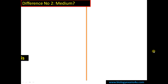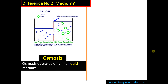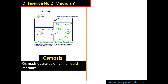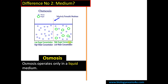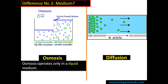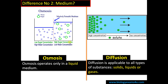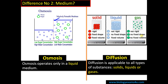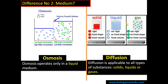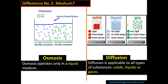Difference number two is regarding the medium. In the case of osmosis, it operates only in a liquid medium — it is a movement of solvent or water molecules from the region of low concentration to the region of high concentration through a semipermeable membrane. Whereas in the case of diffusion, it can occur in any type of substance: solid, liquid, or gas. It is very rapid in the case of gas, less rapid in the case of liquid, and very slow in the case of solid, as atoms are closely packed in solid compared to liquid and gas.